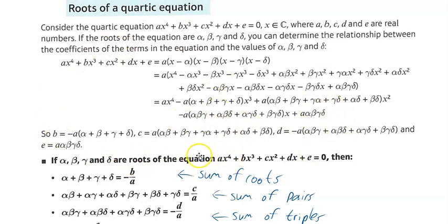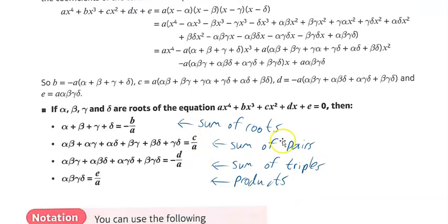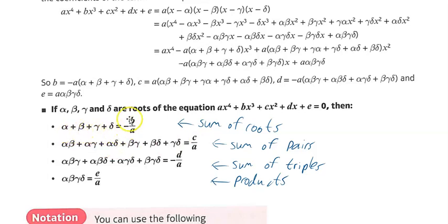Basically it's the same thing, and I've just summed this up here. The sum of the roots — so that's alpha, beta, gamma, and delta — is minus b over a. The sum of the pairs...